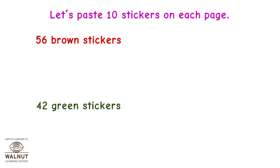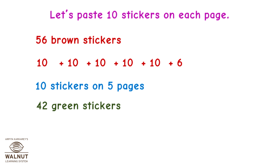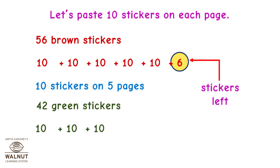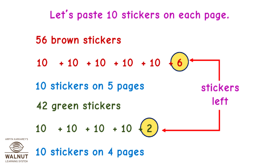We have 56 brown stickers and 42 green stickers. Let's paste 10 stickers on each page. For brown stickers, we divide 56 by 10 and get 5 — that is 10 stickers on 5 pages, but we are left with 6 stickers. For green stickers, we divide 42 by 10 and get 4 — that is 10 stickers on 4 pages, but we are left with 2 stickers. So we cannot paste 10 stickers on each page.